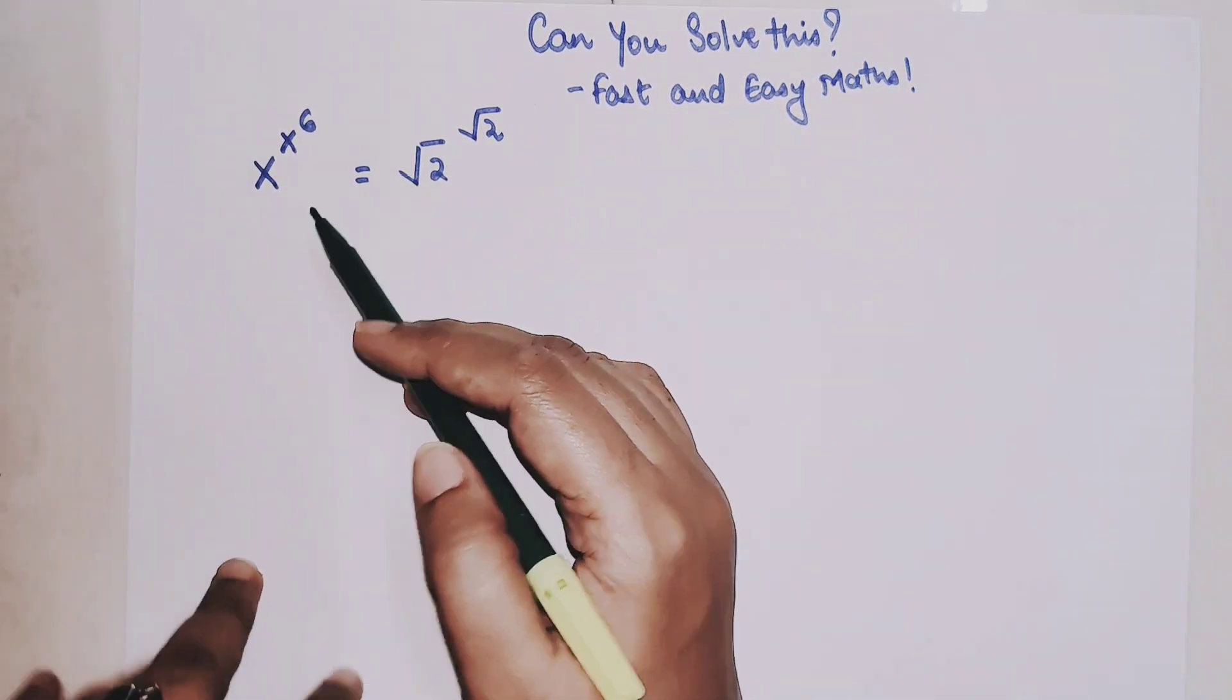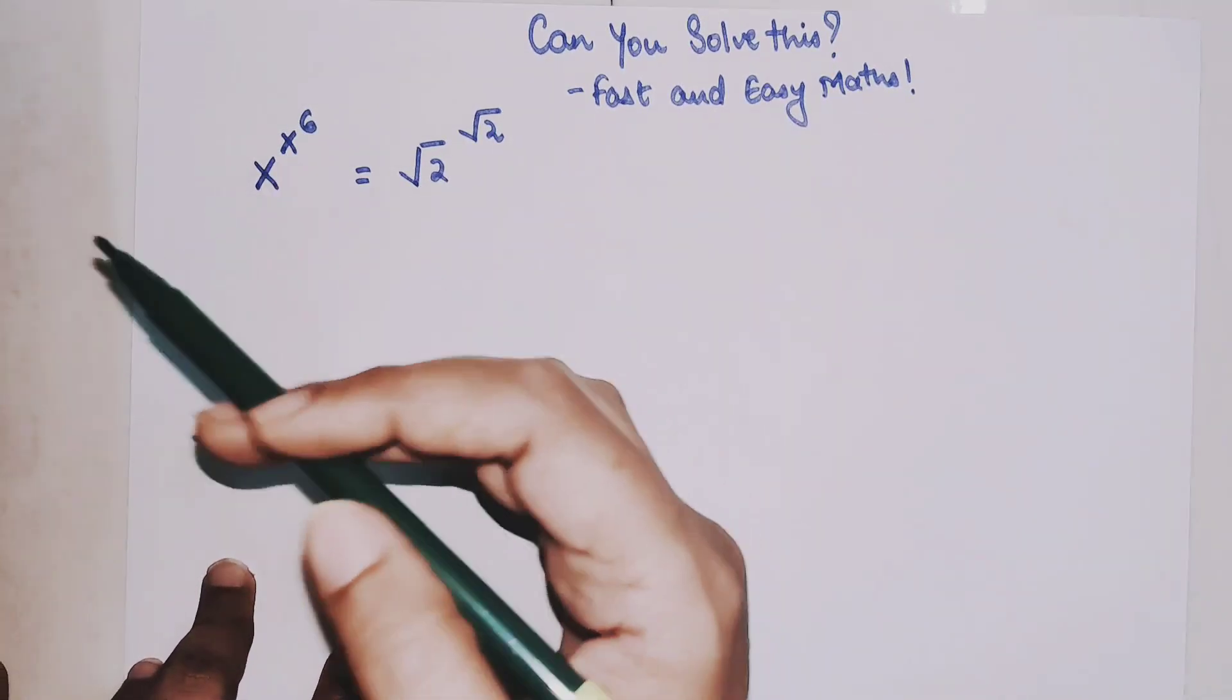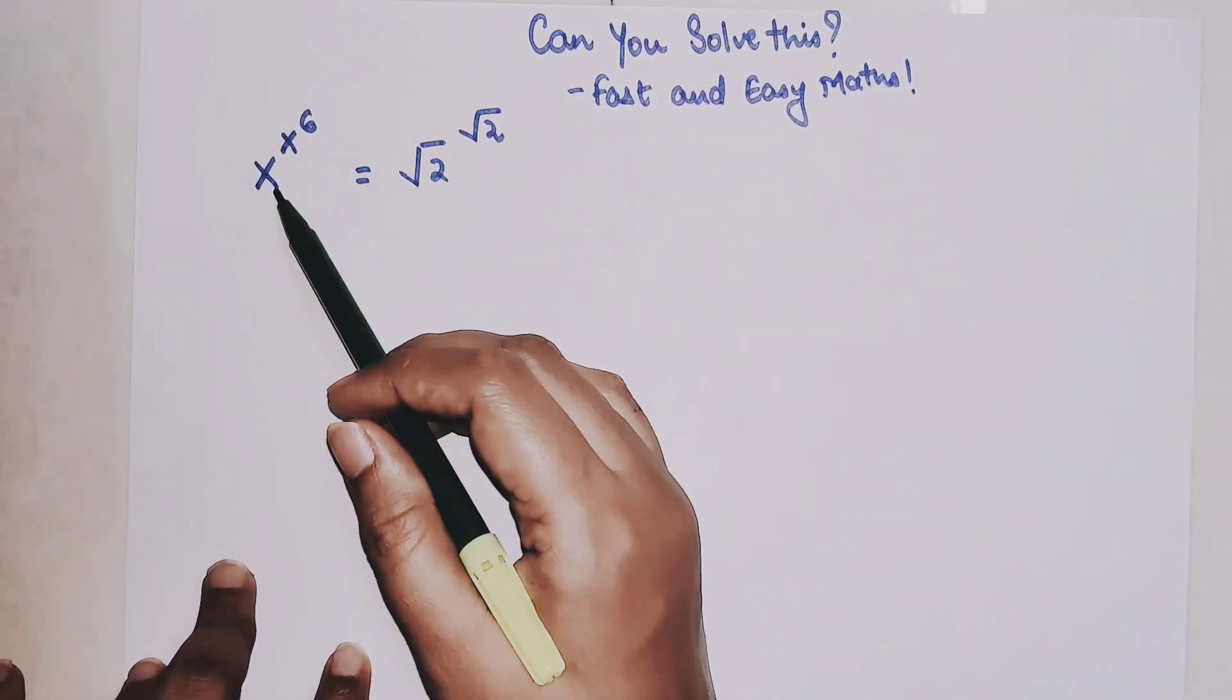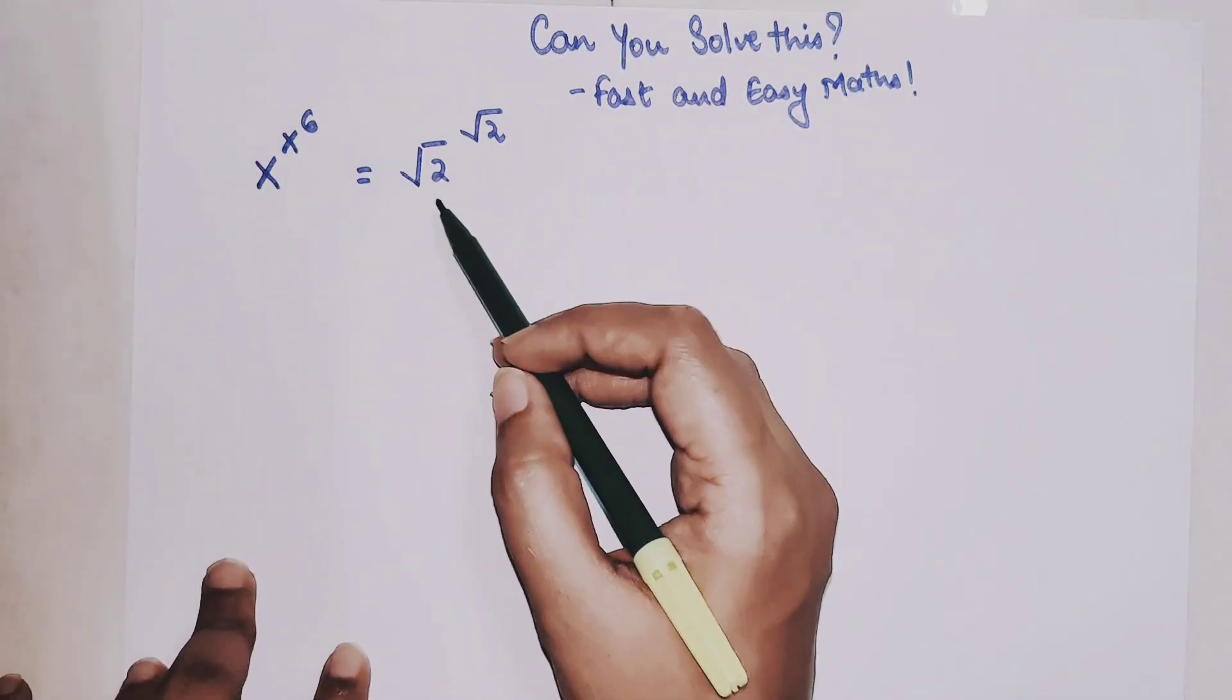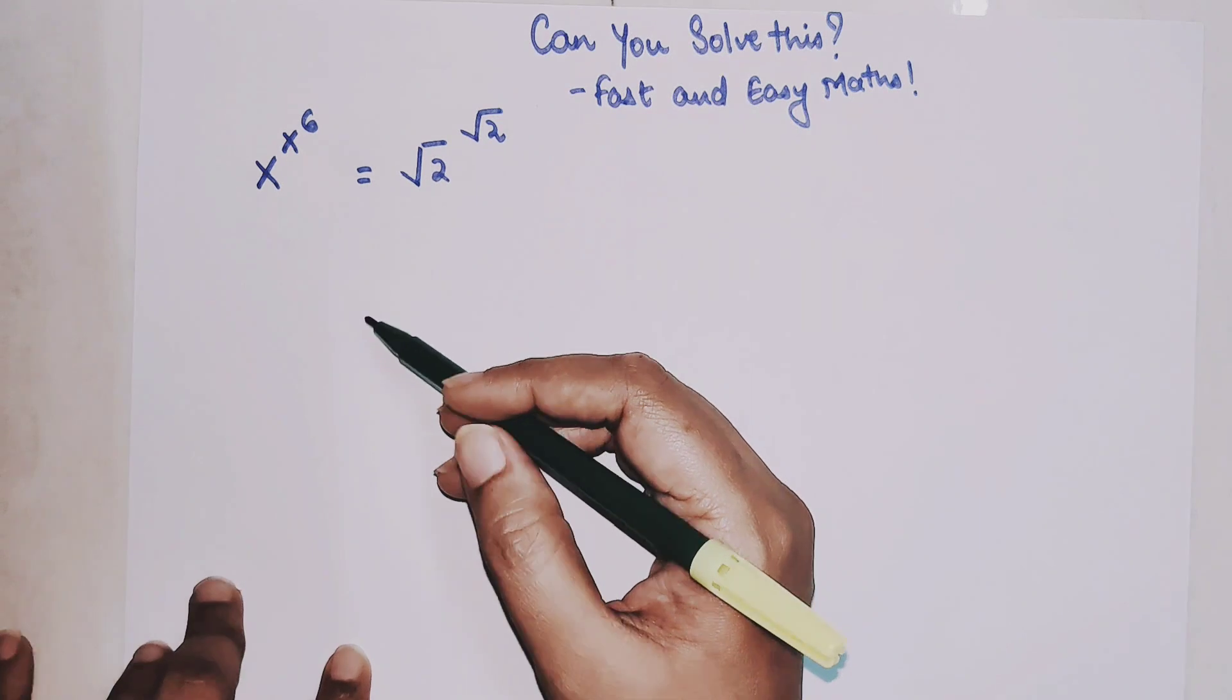So students today we are going to solve a question which lot of people could not do. What is this question about? We have x raised to x raised to 6 which equals root 2 raised to root 2 and we need to find the value of x.